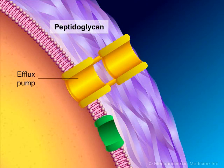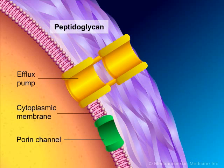These pumps traverse the cell membrane of the bacteria and function to pump out the macrolide antibiotic after it has entered the bacterium. It should be noted that for other bacteria, such as Staphylococcus aureus, a different efflux system which is plasmid-mediated and encoded by the MSRA gene results in macrolide resistance as well as lincosamide and streptogrammin resistance in some cases.